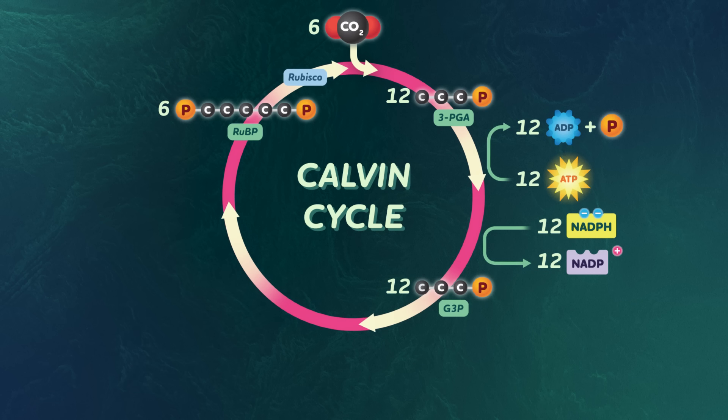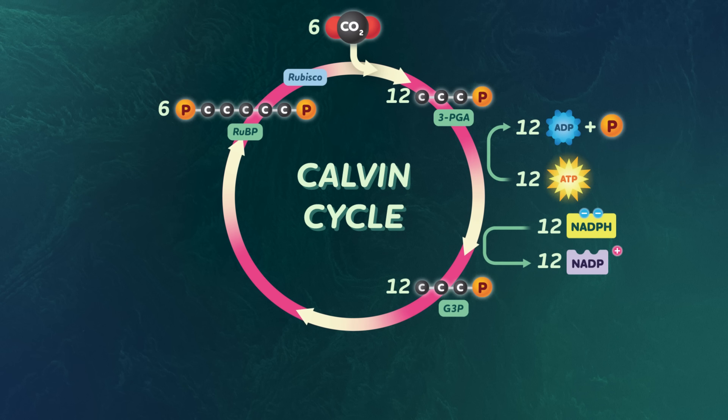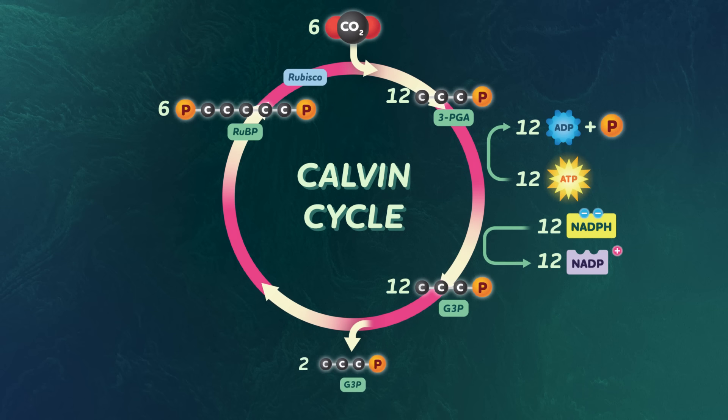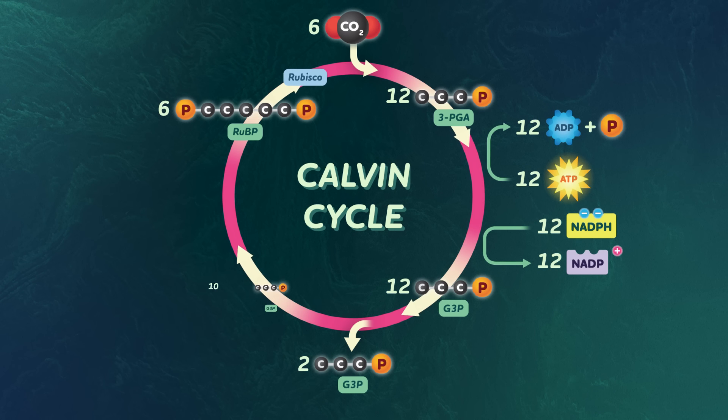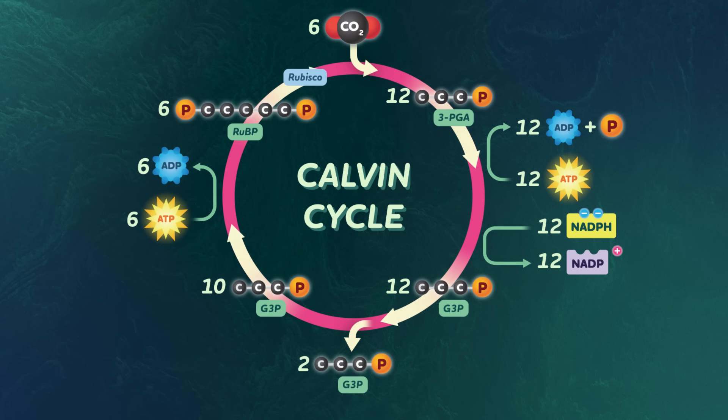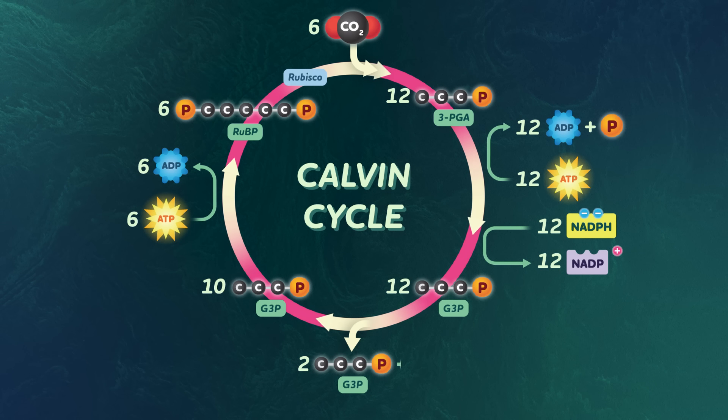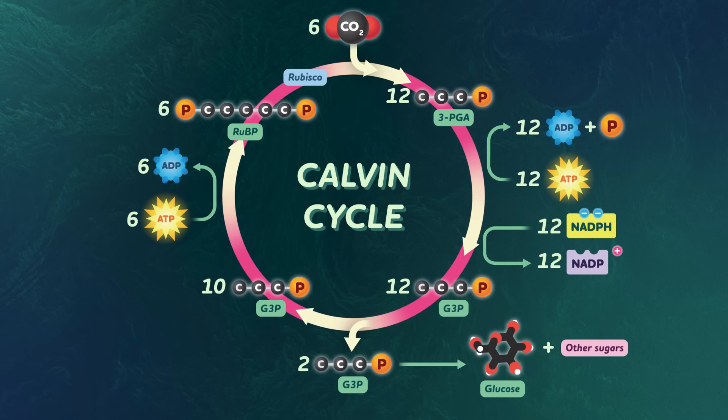But don't leave just because the curtains have closed on the Calvin cycle. There's an encore! The chloroplast has to recharge so that the plant can run the whole routine again. So as the Calvin cycle winds down, two of the G3P sugar molecules exit stage right, and the chloroplast converts the remaining 10 into RUBP molecules, getting ready for the next go. Once two of those G3P sugars leave the stage, the organism can use them for all kinds of things.